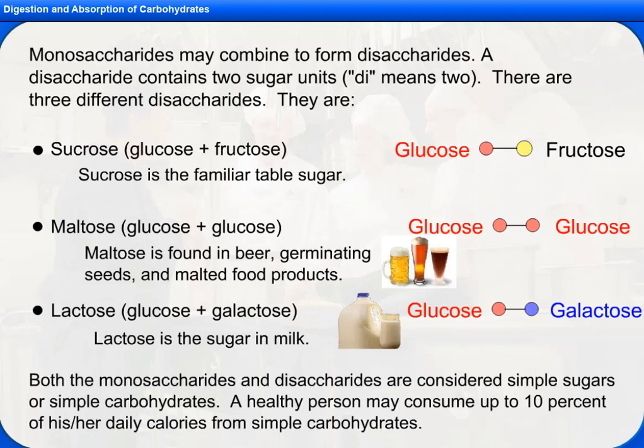Both the monosaccharides and disaccharides are considered simple sugars or simple carbohydrates. A healthy person may consume up to 10 percent of his or her daily calories from simple carbohydrates.